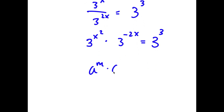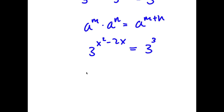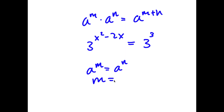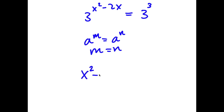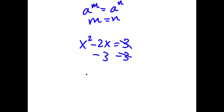I can rewrite this as 3 to the power of x squared times 3 to the power of negative 2x is equal to 3 to the power of 3. Using the rule a to the power of m times a to the power of n equals a to the power of m plus n, I get 3 to the power of x squared minus 2x equals 3 to the power of 3. Since the bases are equal, x squared minus 2x equals 3. Subtracting 3 from both sides gives x squared minus 2x minus 3 equals 0.